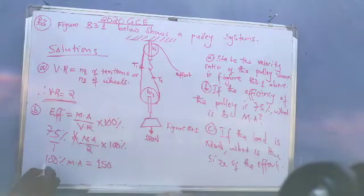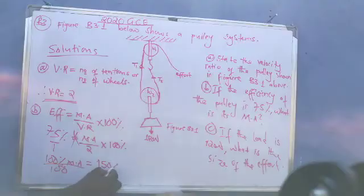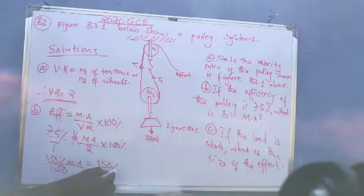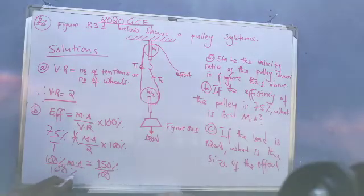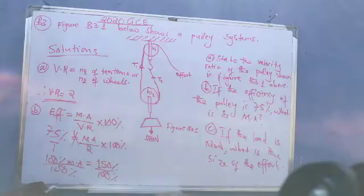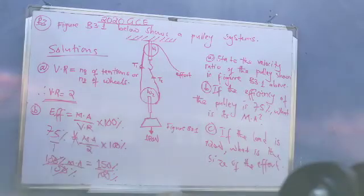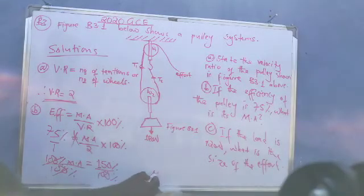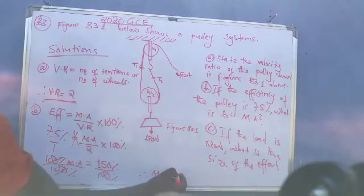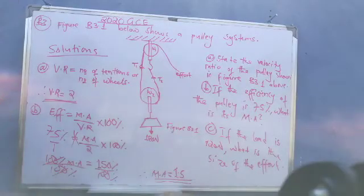So divide both sides by 100. Remember, there is a percent. 2 times 75 which is 150 percent. Percent is a percent, so we divide both sides by 100%, so that percentage and percentage goes, this 100% and 100% goes. We have mechanical advantage is equal to 100 into that one is 1.5. So mechanical advantage is 1.5.